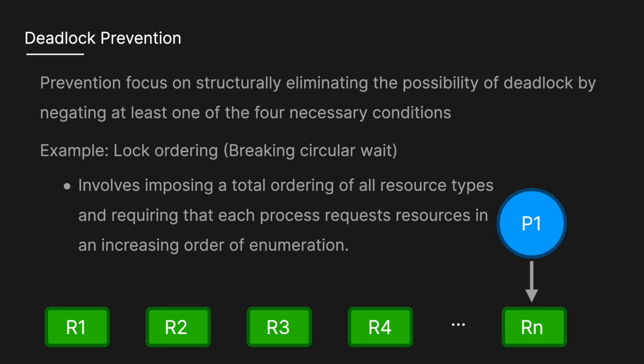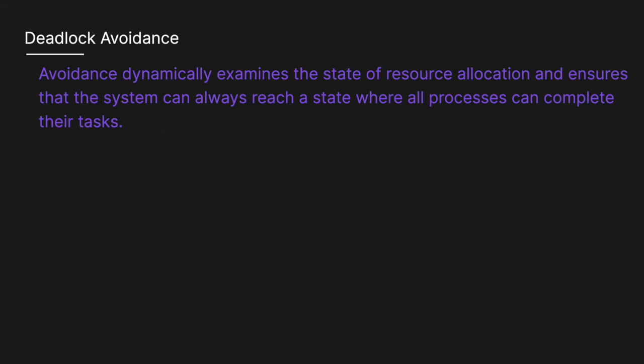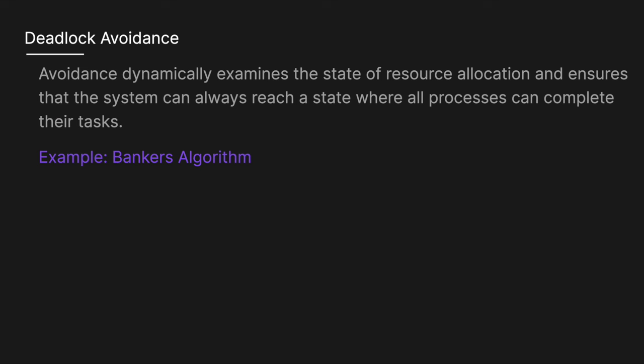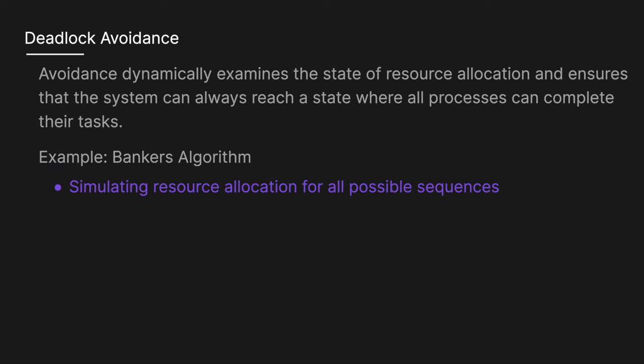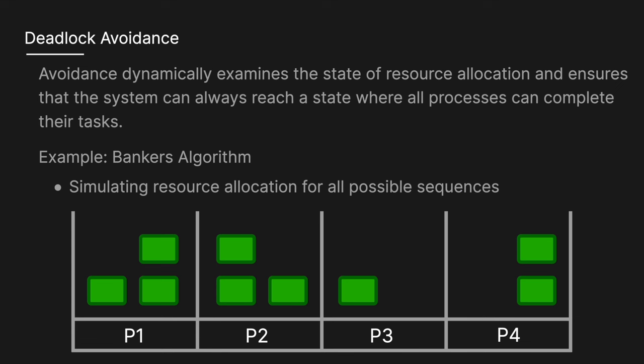There is also deadlock avoidance, which dynamically examines the state of resource allocation and ensures the system can always reach a state where all processes can complete their tasks. One example is the Banker's Algorithm — a strategy that avoids deadlock by simulating resource allocation for all possible sequences and determining if a safe sequence exists. Before granting a resource, the system checks if doing so will leave the system in a safe state. The Banker's Algorithm is more theoretical because its overhead can be quite high in systems with many processes and resources, and it is not commonly used in most operating systems due to its complexity, but may be seen in systems with highly critical and predictable processes.